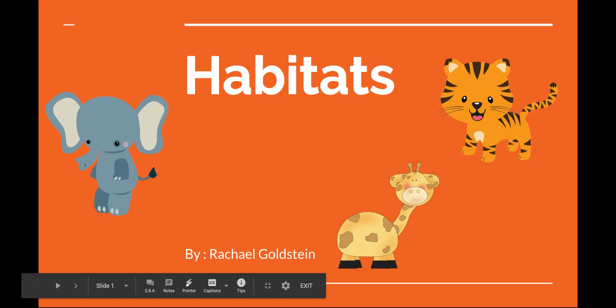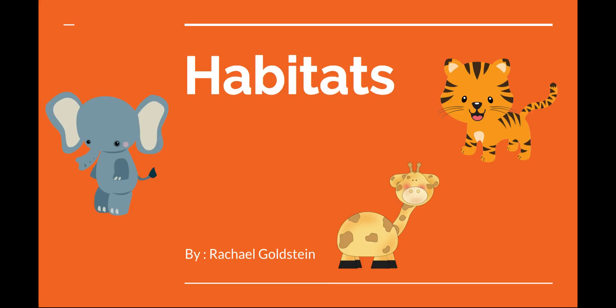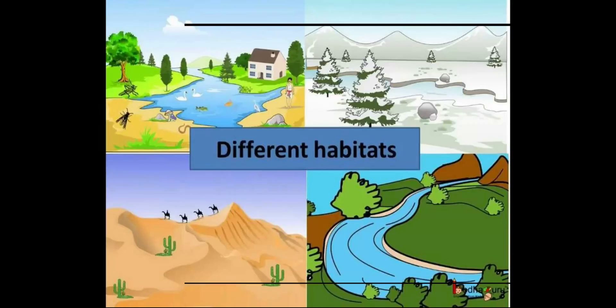Today we will be talking about habitats. A habitat is a place that an animal lives. It provides the animal with food, water, and shelter. There are many different types of habitats around the world, from forests to grasslands. Each habitat is home to different animals which are adapted to live in their environment.